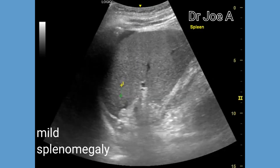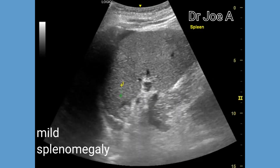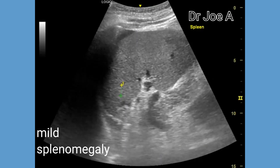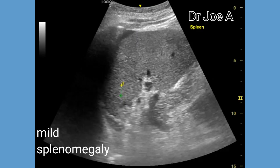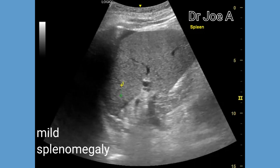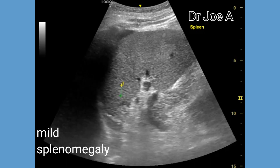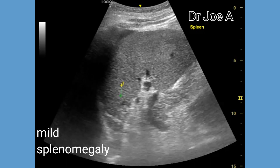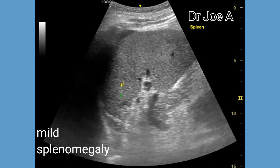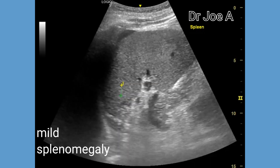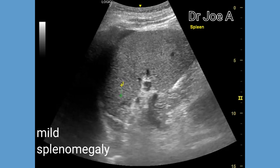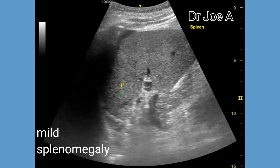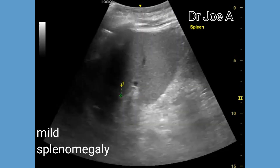Next we go to the spleen, which appears mildly enlarged. Thus we have two findings: ascites and mild splenomegaly.